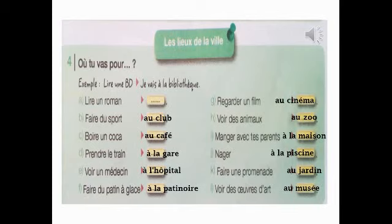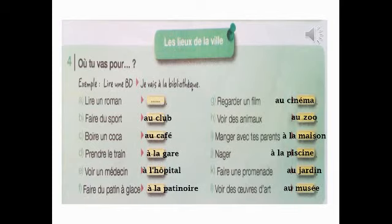Faire du sport — « Je vais au club. » Voir des animaux — « Je vais au zoo. » Activité I : manger avec tes parents à la maison. Activité J : nager — « Je vais à la piscine. » Activité K : faire une promenade — « Je vais au jardin. » Activité L : voir des œuvres d'art — « Je vais au musée. »